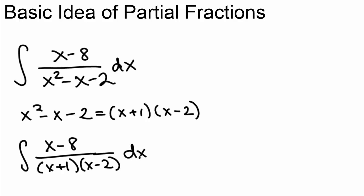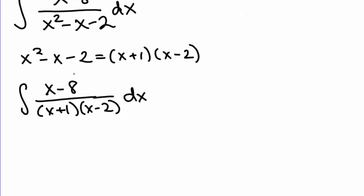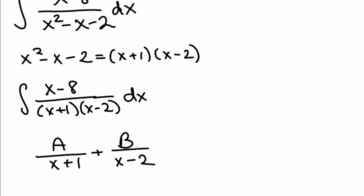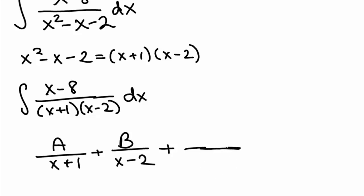The thing to notice here is that if this fraction was the answer to an addition problem between two fractions, the only possible fractions you could have to add together to get this fraction are something over (x plus 1) plus something over (x minus 2). Why is that the case? If we add these two, we get a common denominator — it's (x plus 1) times (x minus 2). If we added another fraction with something else on the bottom, our common denominator would be (x plus 1)(x minus 2) times whatever that other thing is. Since there's no other factor in the bottom, the only possibility is that it's actually one of the things we already had, like (x plus 1), in which case you could just combine those two.